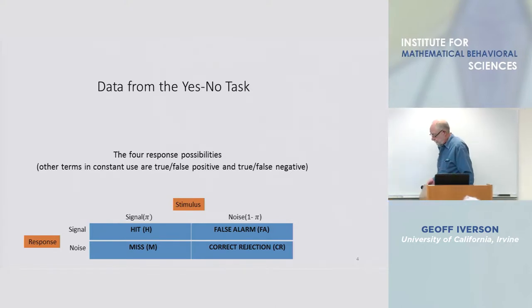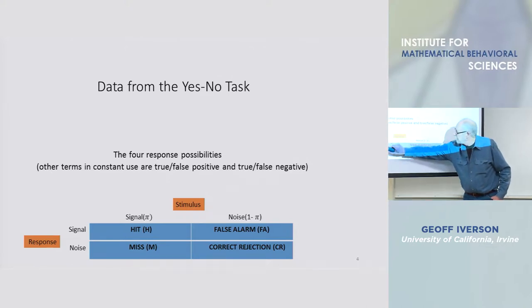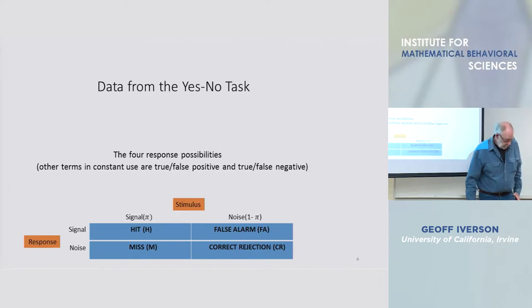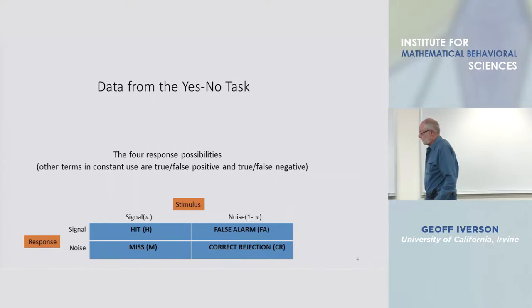Over multiple trials, the probability that a subject makes a hit versus a miss, those probabilities are complementary, they add to one, so there's a constraint and likewise here.